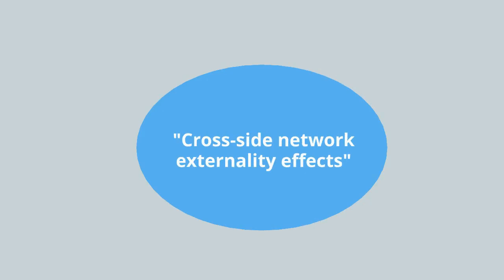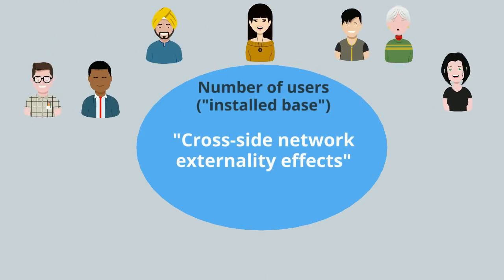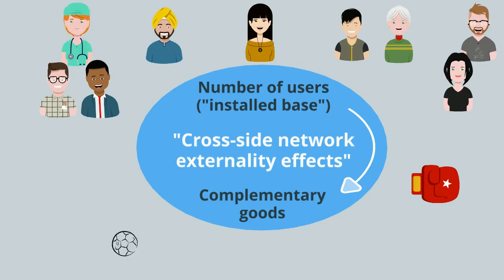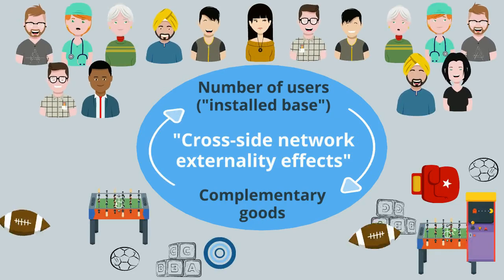There can also be cross-side network externality effects. As the number of users of a good increases, it can attract the developers of complementary goods like games, and if the number of these complements increases, that in turn can attract even more users — a self-reinforcing effect.